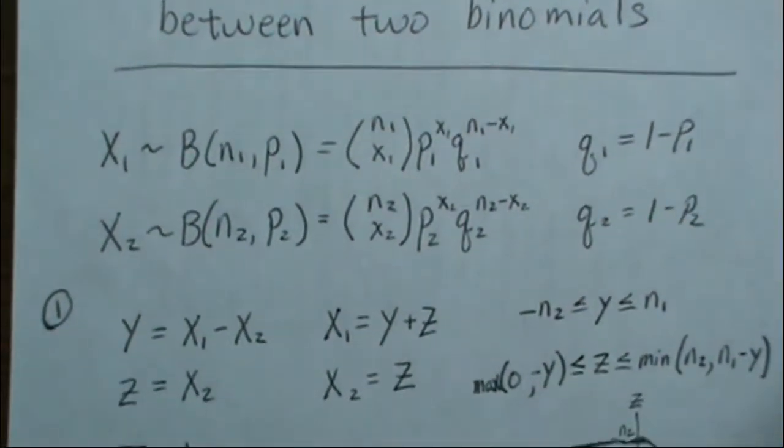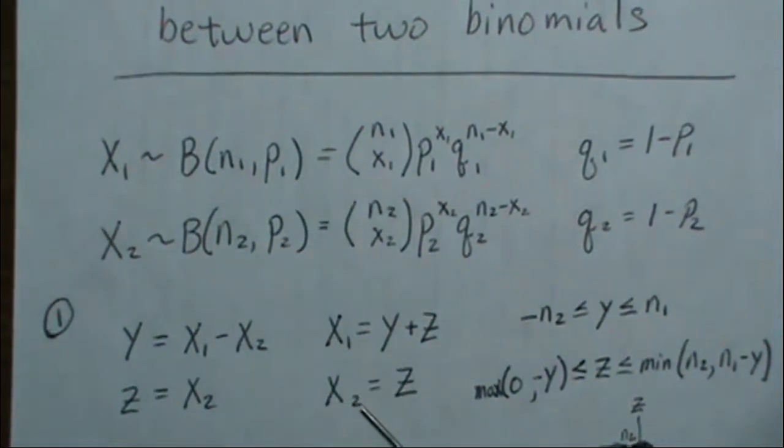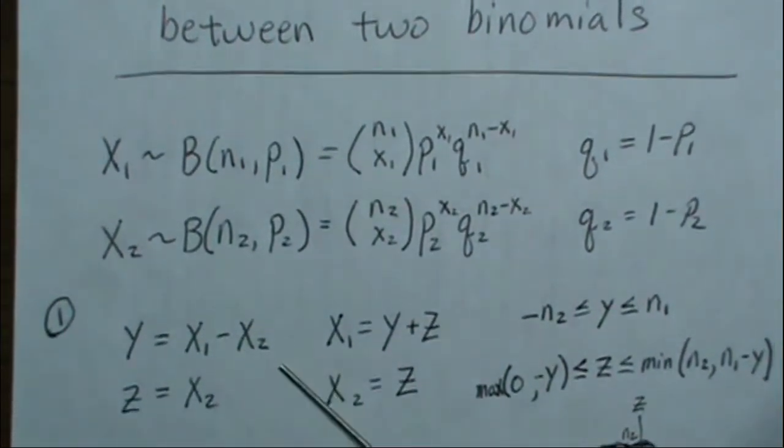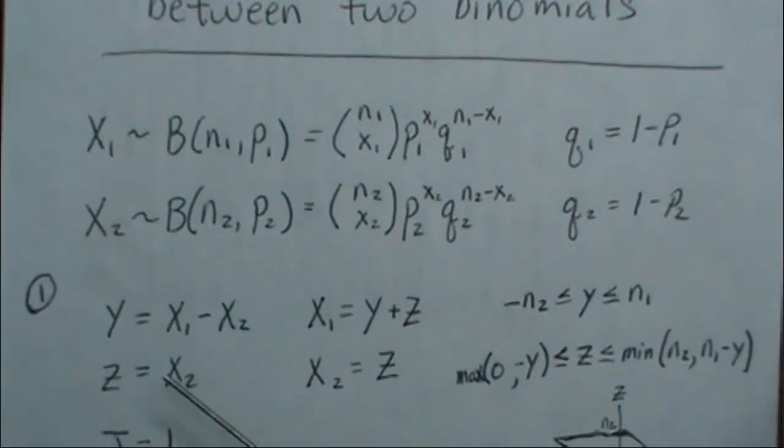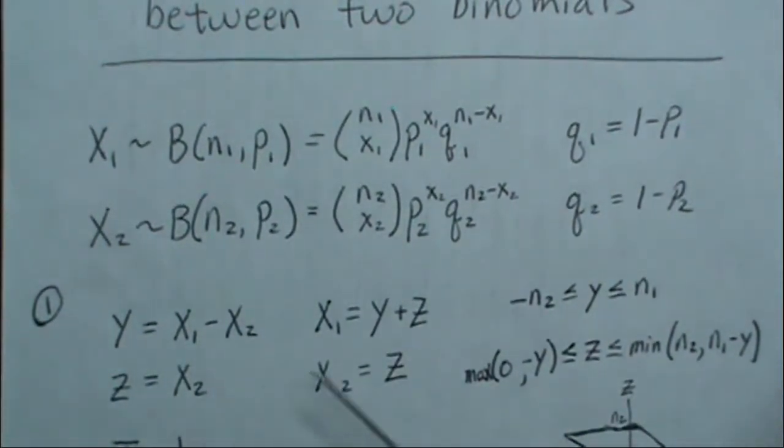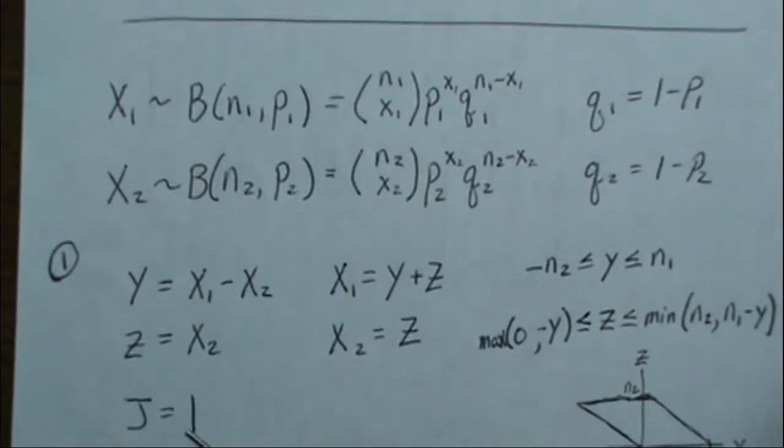Here we set up our transformation. We go from X1, X2 to Y and Z, where Y is ultimately the density that we want and it's the difference of these two binomials. When we're in this case, the Jacobian of the transformation is 1.